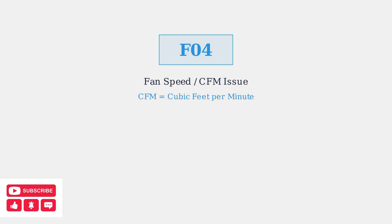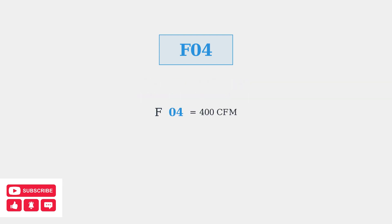The Goodman F04 error code is a common issue that HVAC technicians and homeowners encounter with Goodman heating and cooling systems. This error code specifically indicates an issue with your HVAC system's fan speed, or CFM, which stands for cubic feet per minute. The number 04 in the error code may relate to a specific CFM value, potentially indicating 400 CFM airflow.